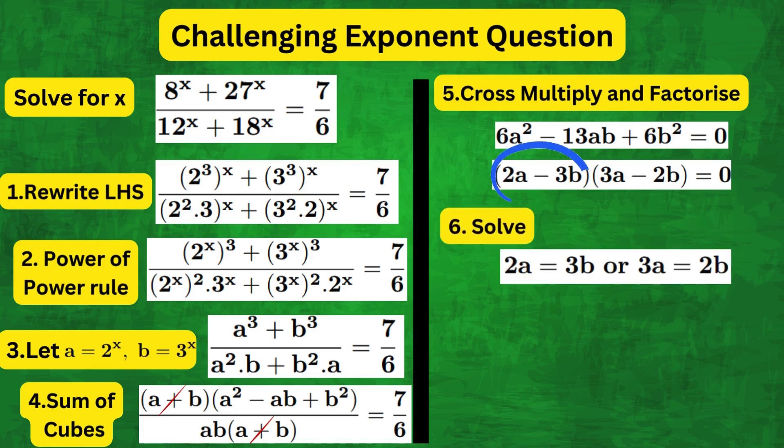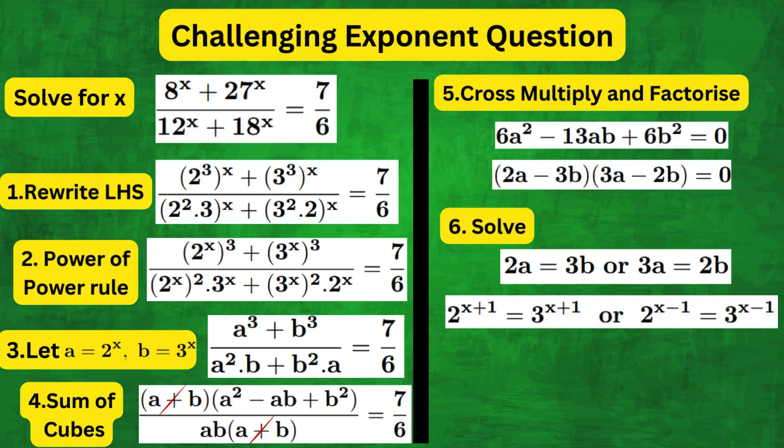Therefore, 2a equals 3b or 3a equals 2b. Or in other words, 2 to the x plus 1 equals 3 to the x plus 1 or 2 to the x minus 1 equals 3 to the x minus 1.